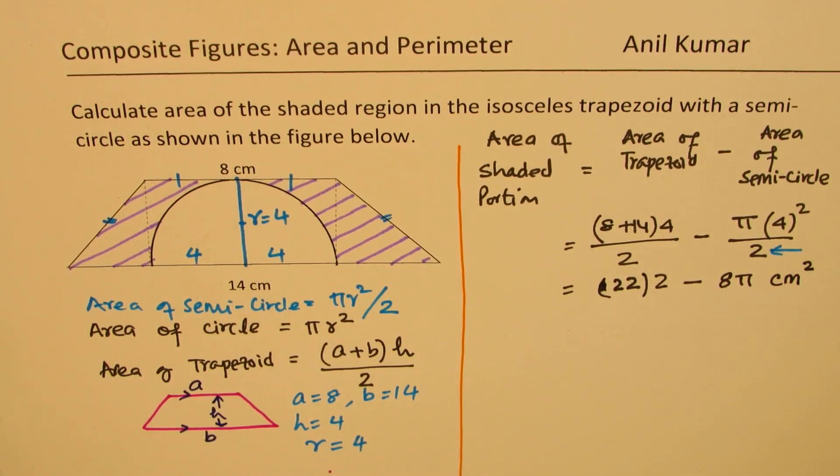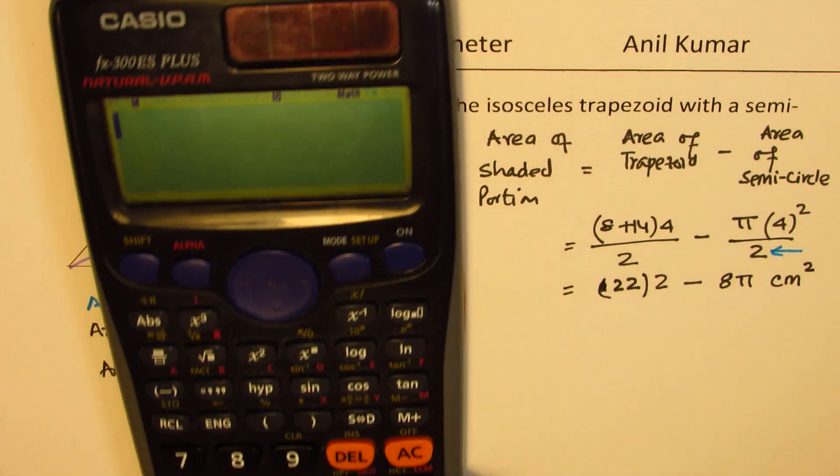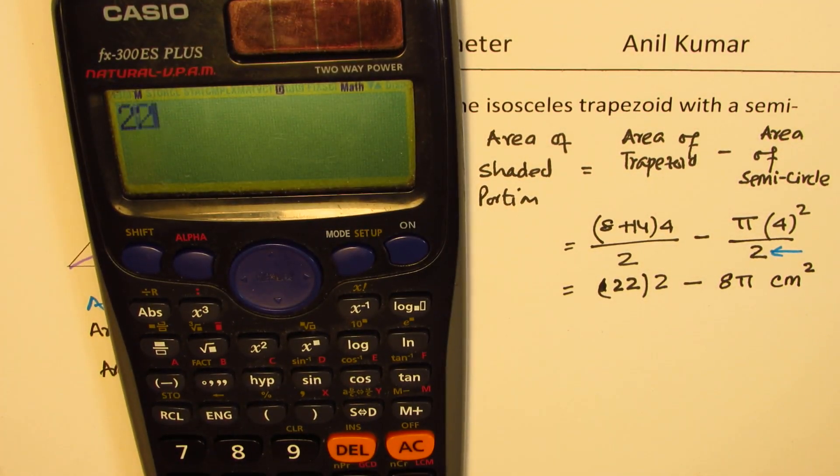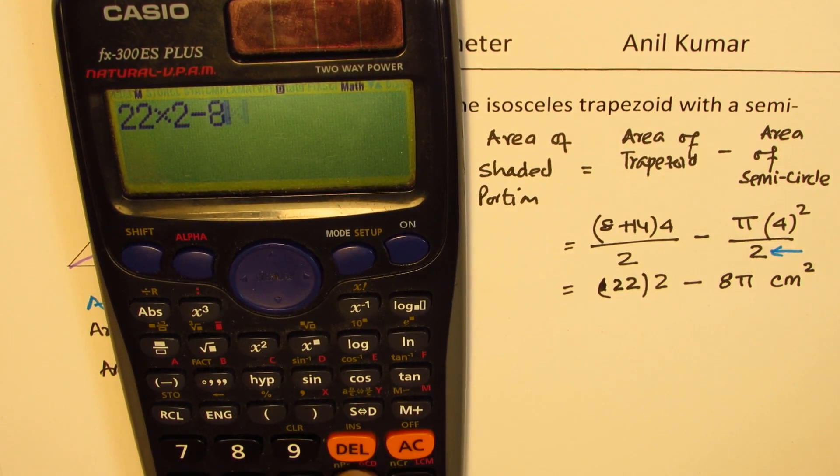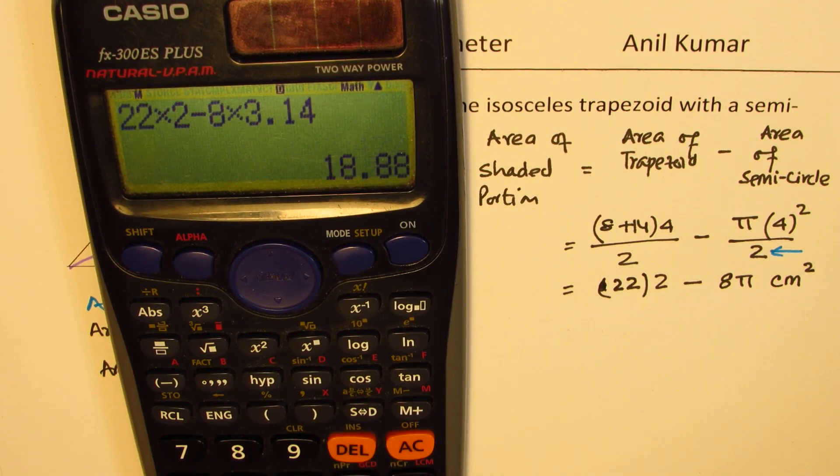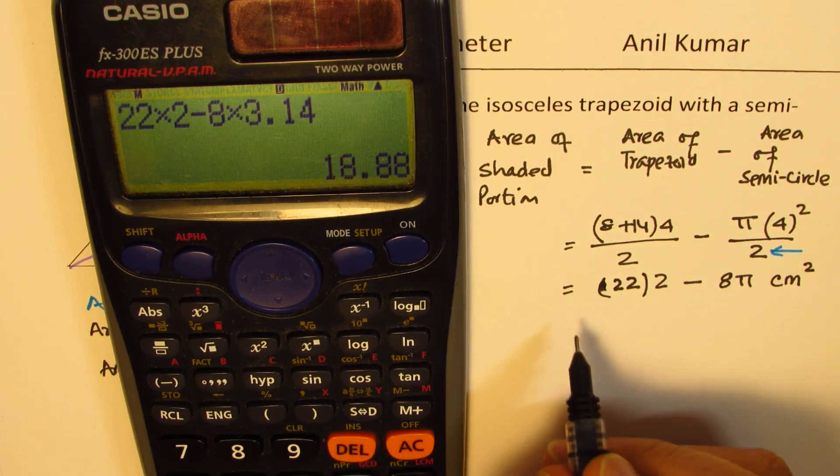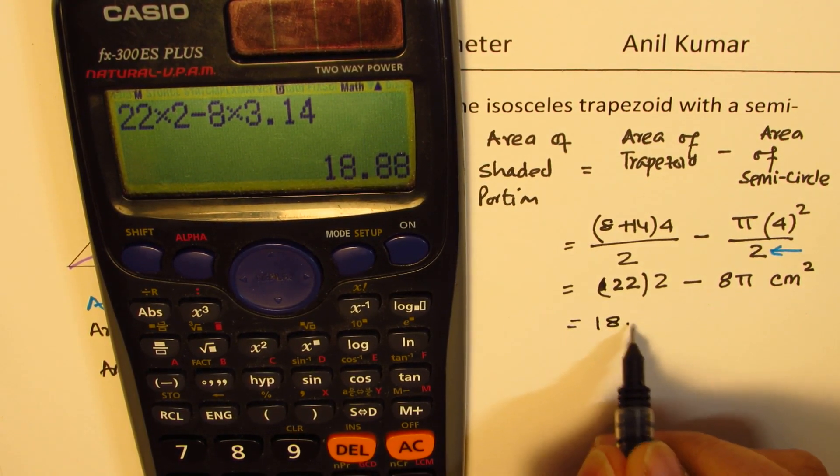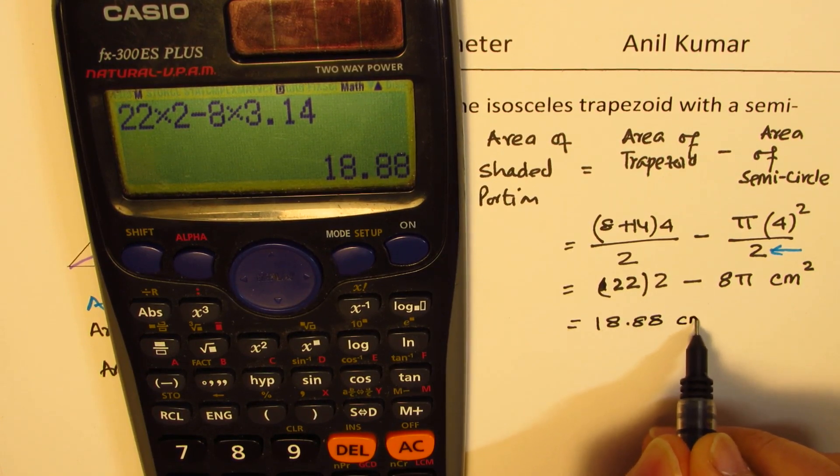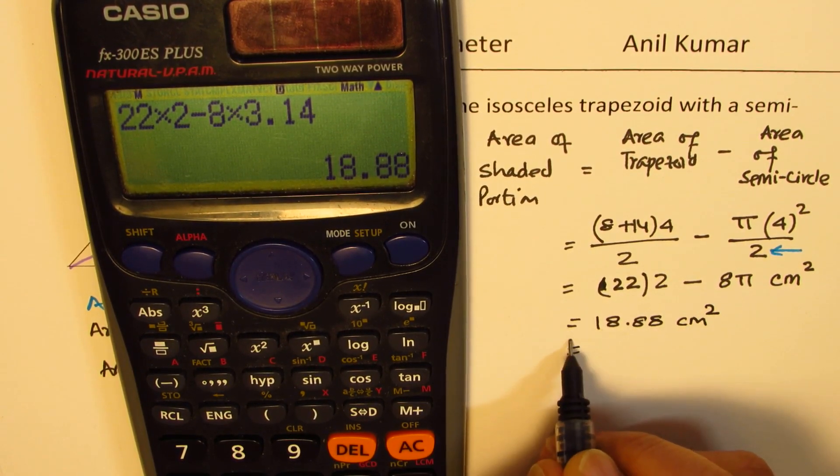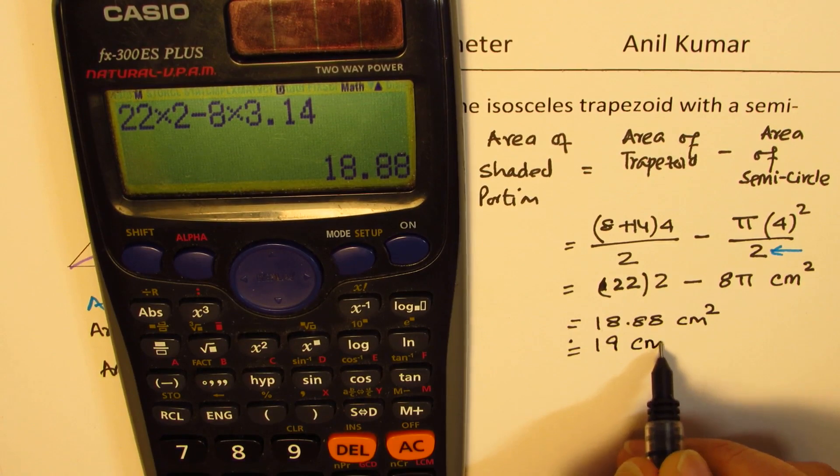Is it clear to you? Let's use calculator. So we have 22 times 2 minus 8 times 3.14. And the answer in decimals is 18.88 centimeters squared. We can say approximately 19 centimeters squared.